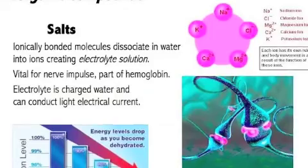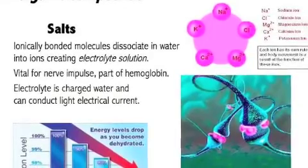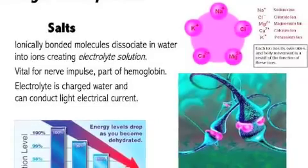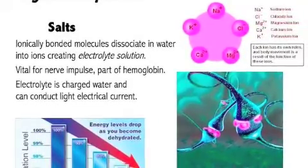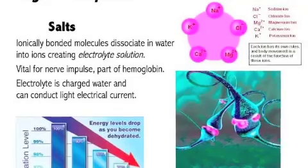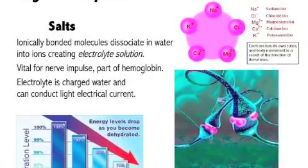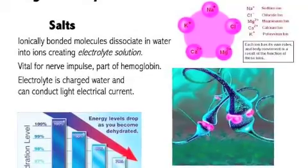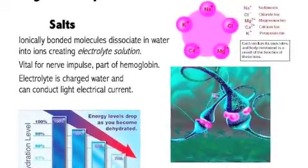Ions are vital for nerve impulses and are, for example, part of the hemoglobin. So we need them. Electrolyte is charged water and conducts a light electrical current. If we dehydrate ourselves, we decrease the energy that the body can have. So drink up on water.